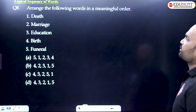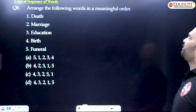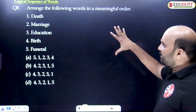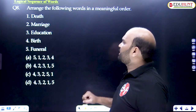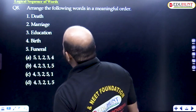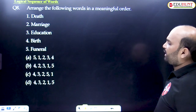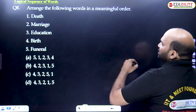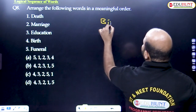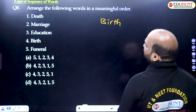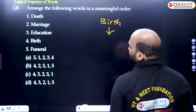Let's go to question number eight: arrange the following words in a meaningful order or sequence. What I am given: death, marriage, education, birth, and funeral. First one is birth — for human beings the first one is birth.